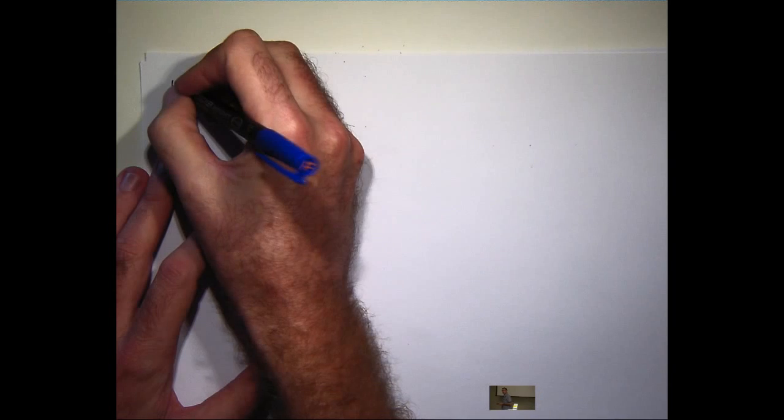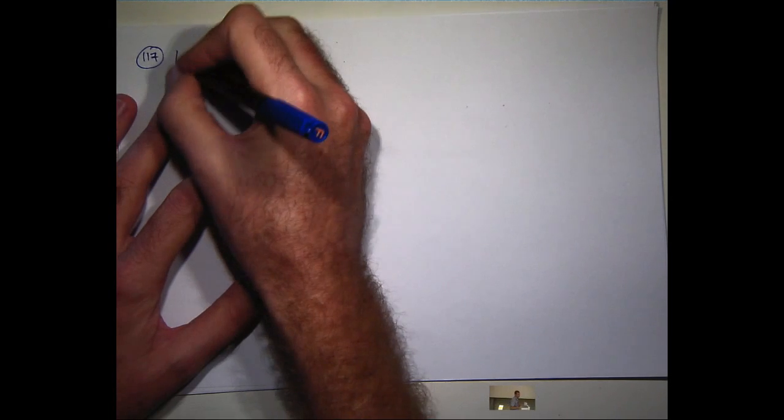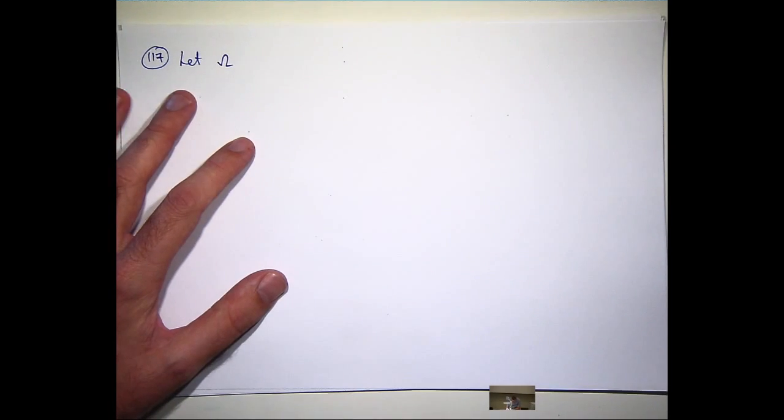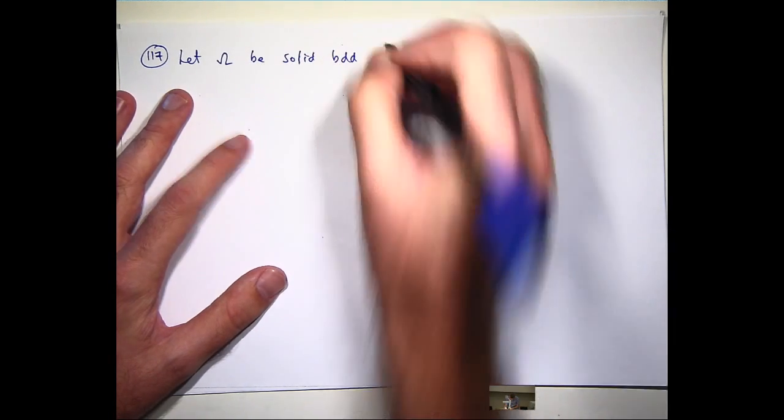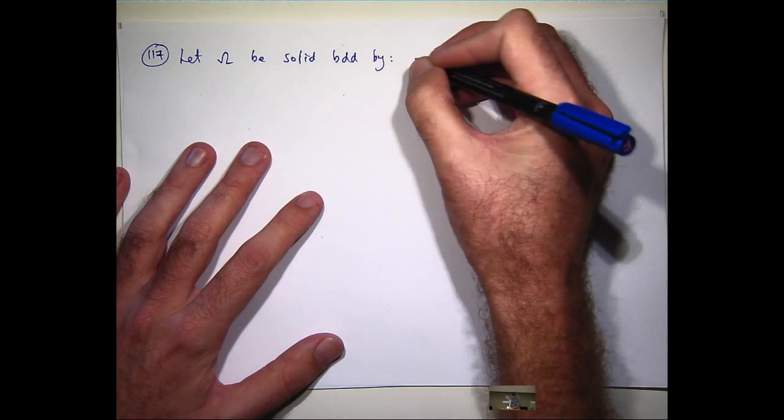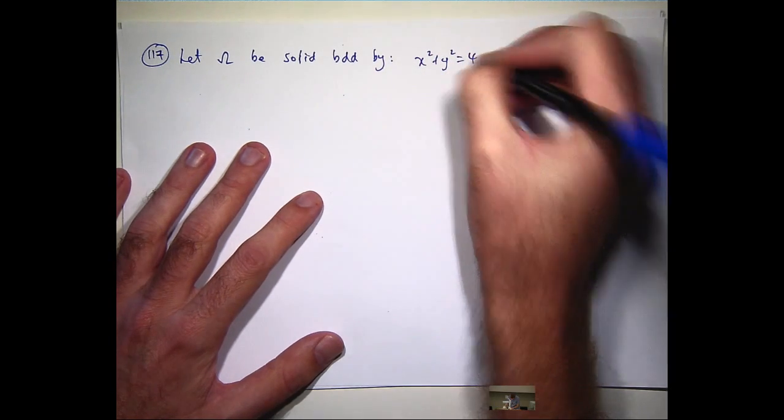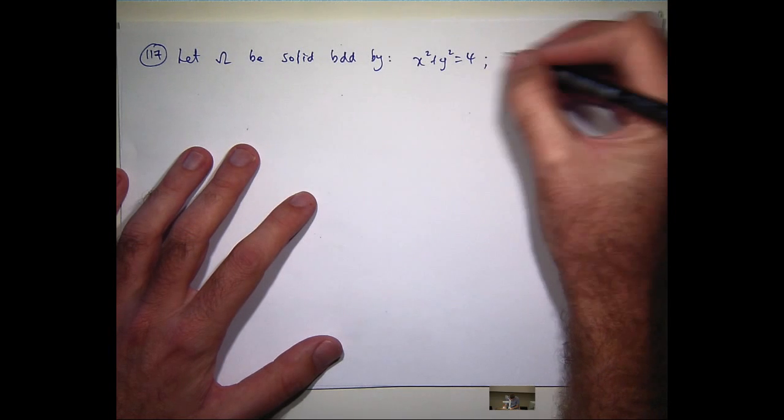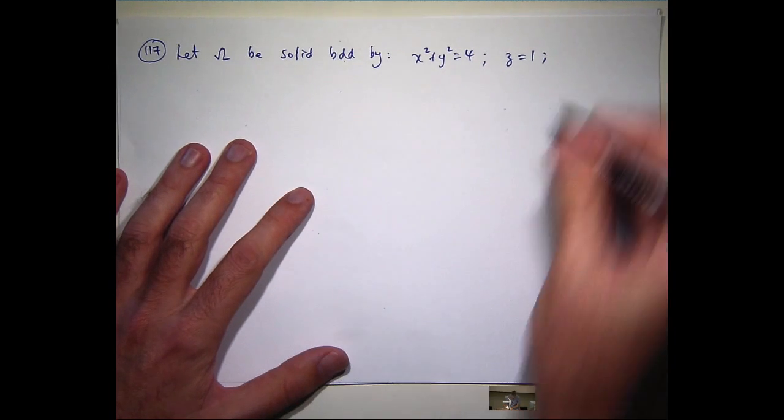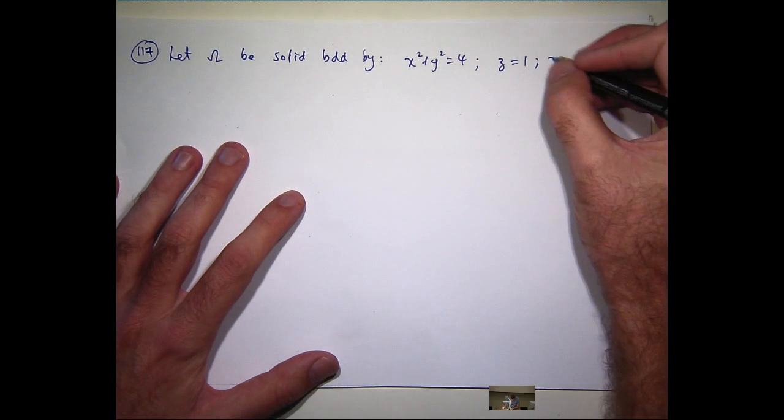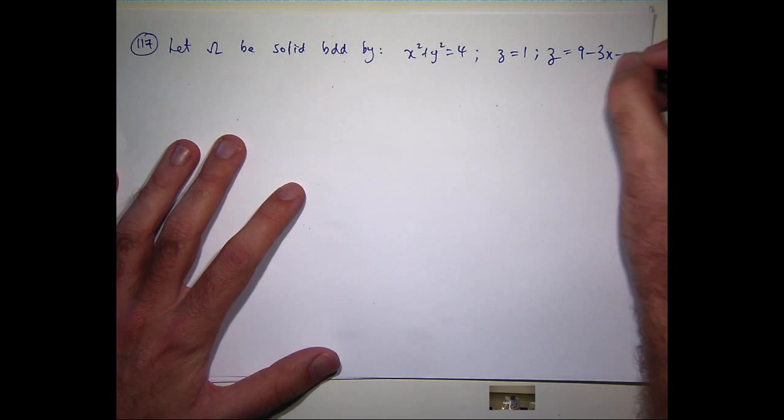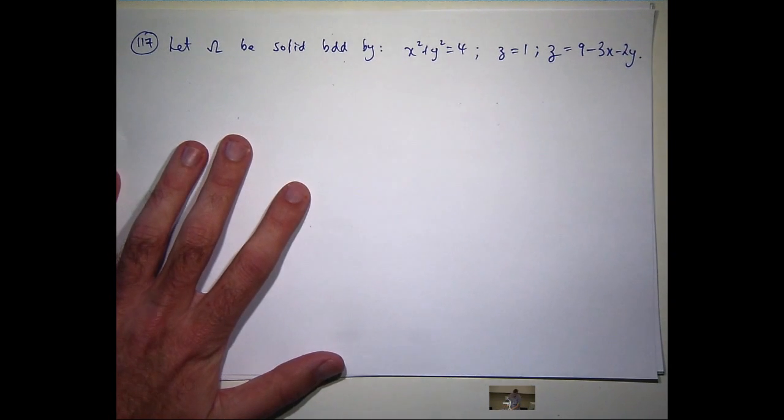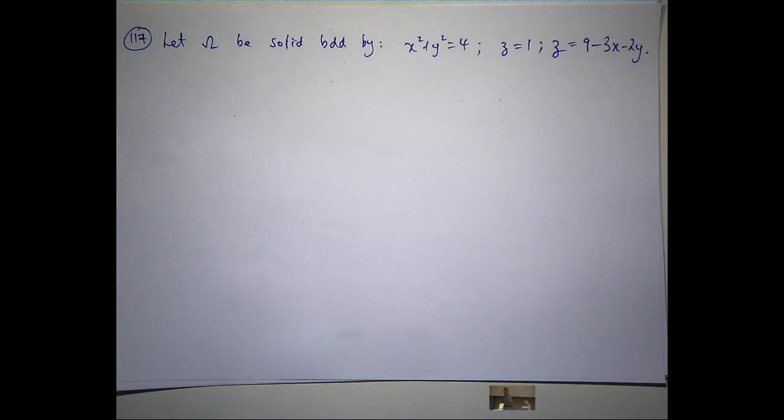So this is 1,1,7. All right. So I'm going to say our region is omega, the solid bounded by this cylinder, this plane, constant plane, and this non-constant plane.